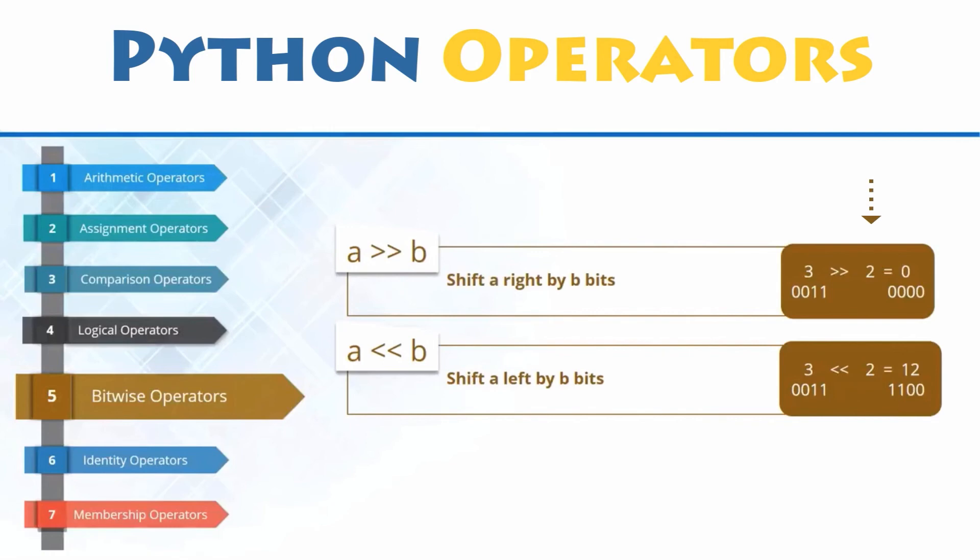Finally, once you have done that, you will have to specify the number of bits you want to shift. Then the binary output will shift towards the direction you chose, left or right, for the number of bits you specified.